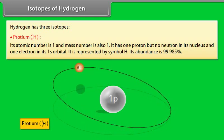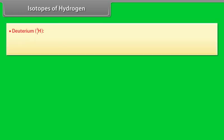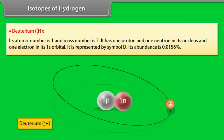Deuterium. Its atomic number is 1 and mass number is 2. It has one proton and one neutron in its nucleus and one electron in its 1s orbital. It is represented by symbol D. Its abundance is 0.0156%.